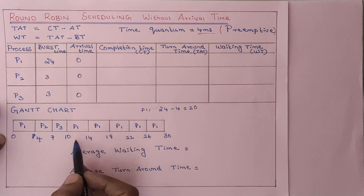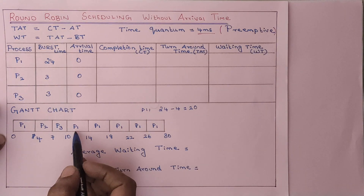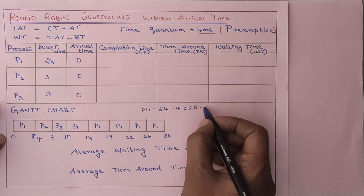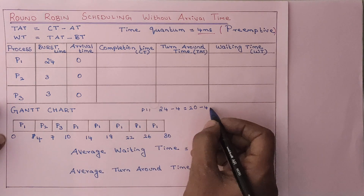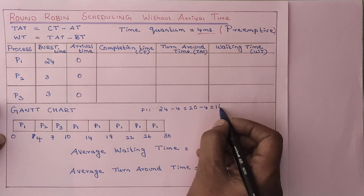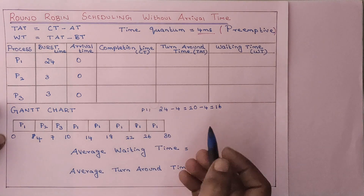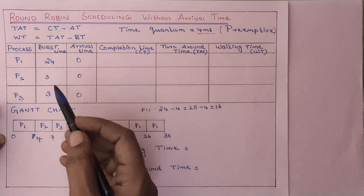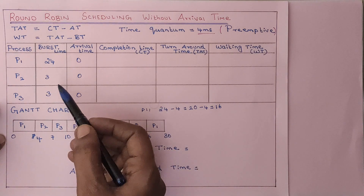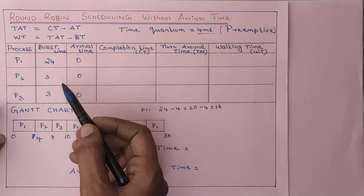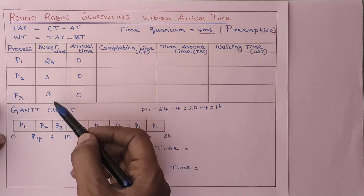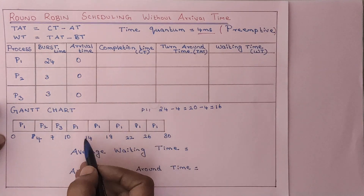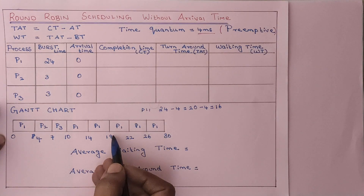Now we will come to the second cycle. From 10 to 14, P1 will execute — again 4 milliseconds of jobs will execute, so 16 milliseconds of jobs are left. Then the control will go to P2 — it has already completed its process. P3 has also completed its process. Then again from 14 to 18, P1 continues.